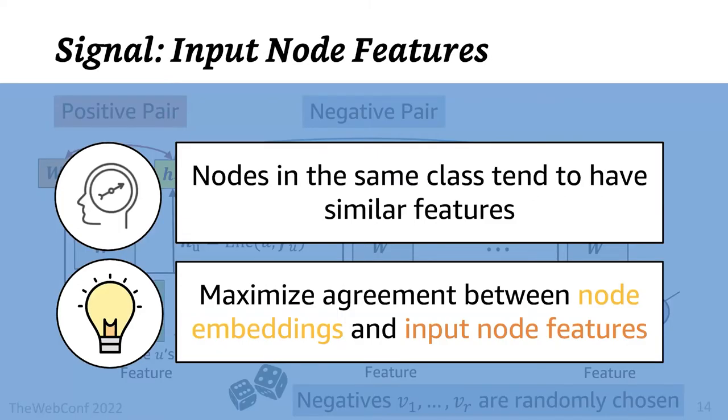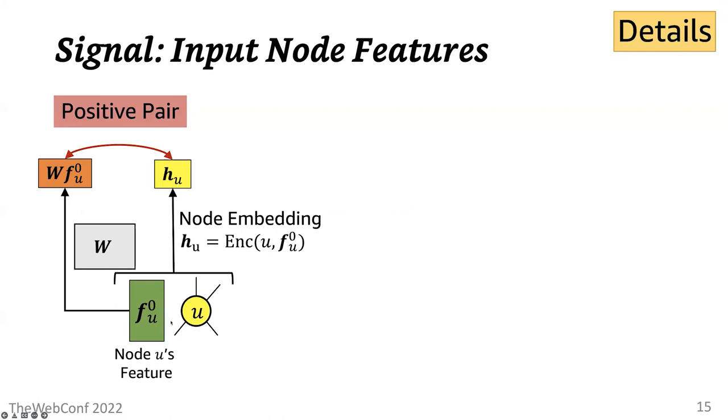Input node features are the first signal that we utilize. Our intuition is that entities in the same community tend to have similar attributes. Therefore, informative node attributes can be used to distinguish those in the same class from those in different classes. And node features are especially helpful for sparse graphs, since they can complement scarce relational information. So based on this, we maximize the agreement between node embeddings and input node features. Here, this yellow circle denotes the anchor node, and these rectangles denote node features or node embeddings.